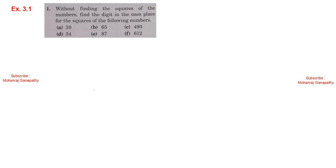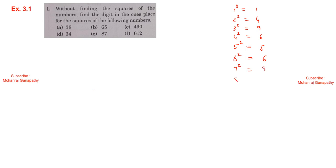Exercise 3.1: Without finding the squares of numbers, find the digit in the 1's place for the squares of the following numbers. Unit digit of 1 squared is 1, unit digit of 2 squared is 4, unit digit of 3 squared is 9, unit digit of 4 squared is 6, unit digit of 5 squared is 5, unit digit of 6 squared is 6, unit digit of 7 squared is 9, unit digit of 8 squared is 4, unit digit of 9 squared is 1, unit digit of 10 squared ends in 0 — irrespective of the numbers next to it.